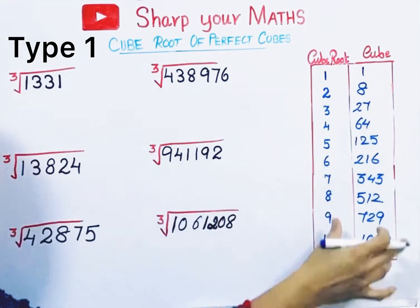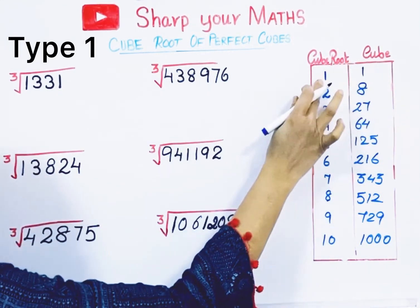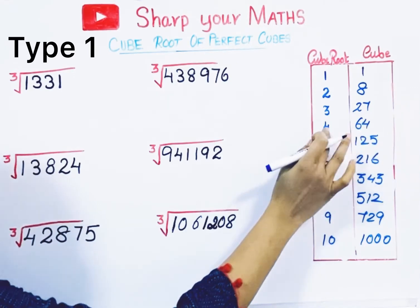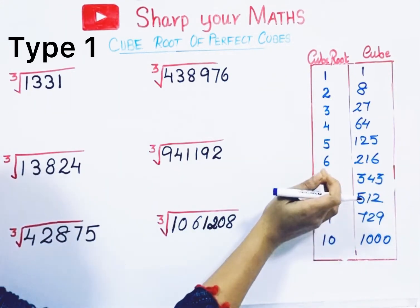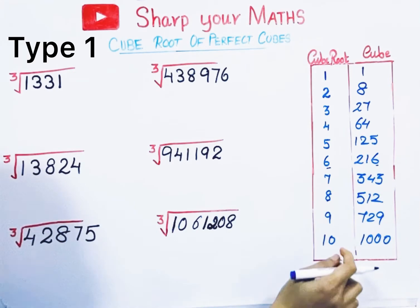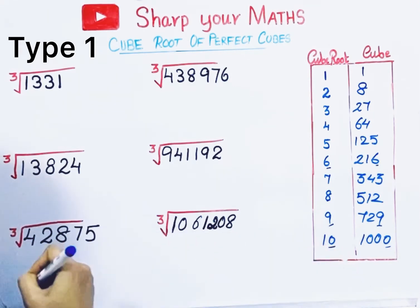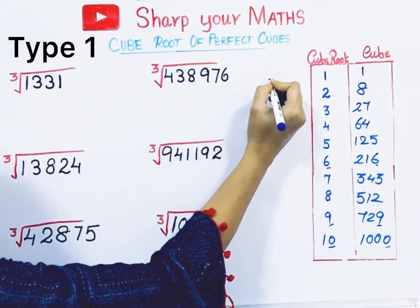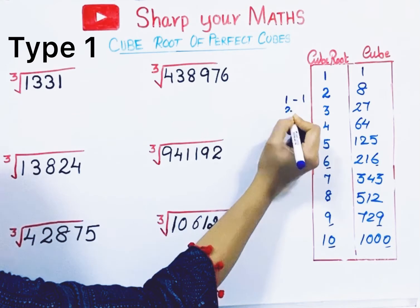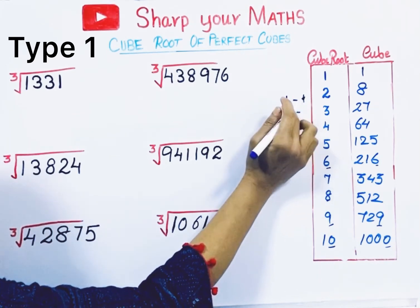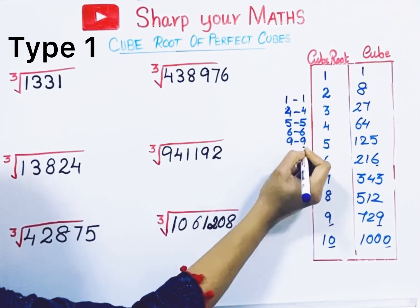From these tables, if a cube ends with 1, its cube root ends with 1. If a cube ends with 4, cube root ends with 4. If it ends with 5, cube root ends with 5. If it ends with 6, cube root ends with 6. If it ends with 9, cube root ends with 9. If it ends with 0, cube root ends with 0 — same digit.